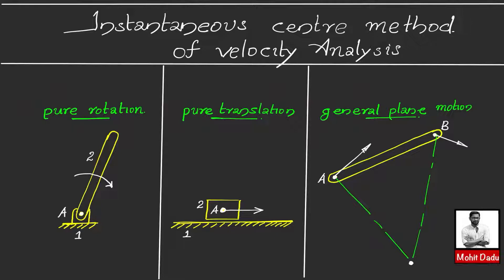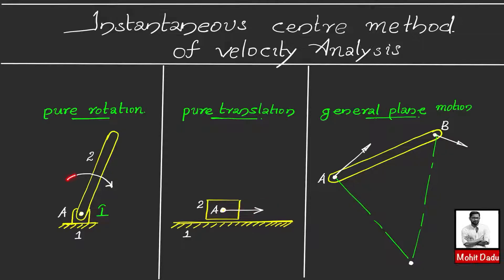For pure rotation, link 2 is rotating about point A with respect to the fixed link. This itself is a pure rotation about this point, so I will call this the instantaneous center for this rotation and mark it as I. In the second case, we have pure translation where block 2 has a relative motion of translation with respect to the fixed link 1, and the path is always straight.